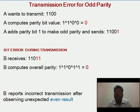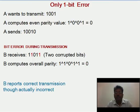Transmission error for odd parity: A wants to transmit 1100. It computes the parity bit value, which is 0. A adds parity bit 1 to make odd parity and sends the message 11001. Assume a bit error occurs during transmission and B receives 11011. B computes the overall parity and gets 0. B reports incorrect transmission after observing the unexpected even result, because the message was transmitted with odd parity. It is noted that the parity bit is used for detection of single bit errors only.